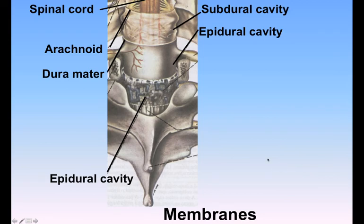The Medulla Spinalis does not fill the part of the vertebral canal in which it lies. It is unsheathed by three protective membranes, separated from each other by two concentric spaces. The three membranes are named from without inward: the Duramater, the Arachnoid, and the Piamater.